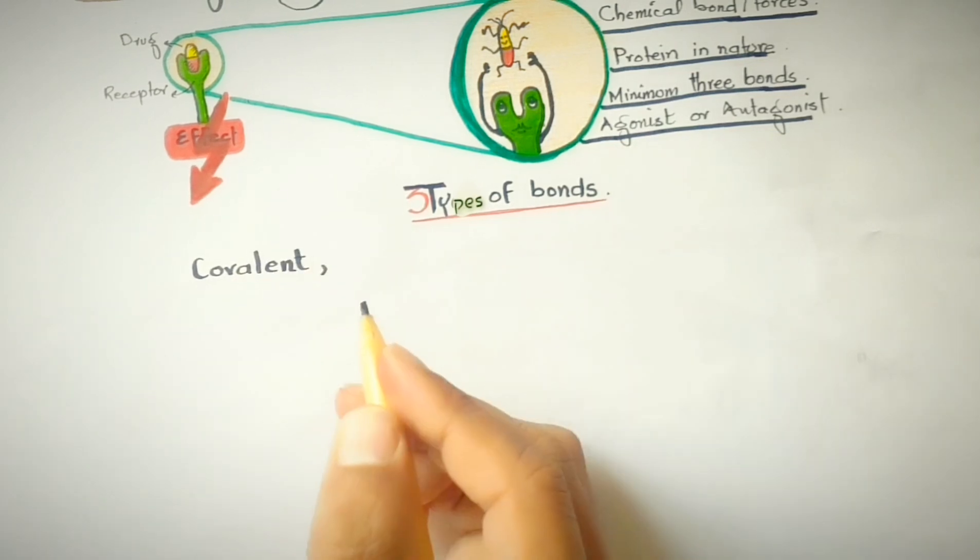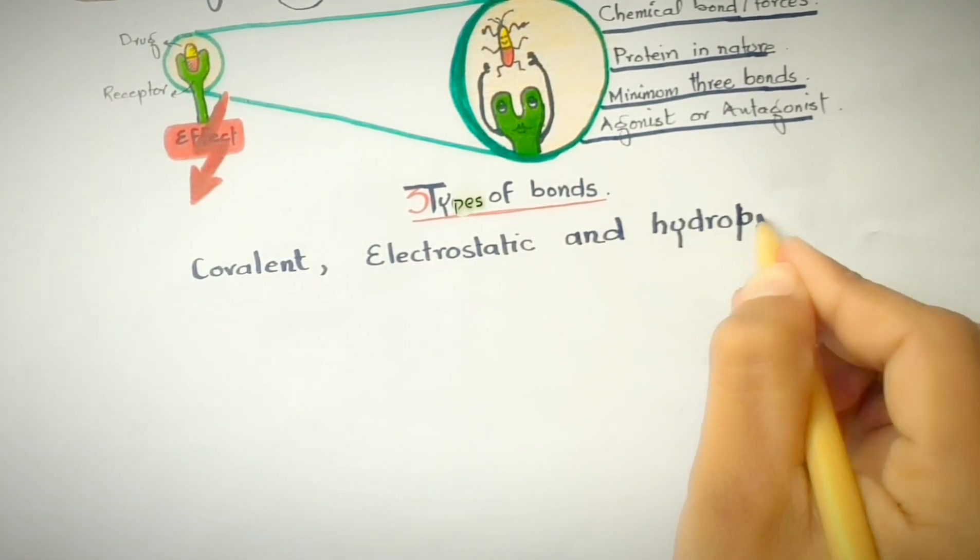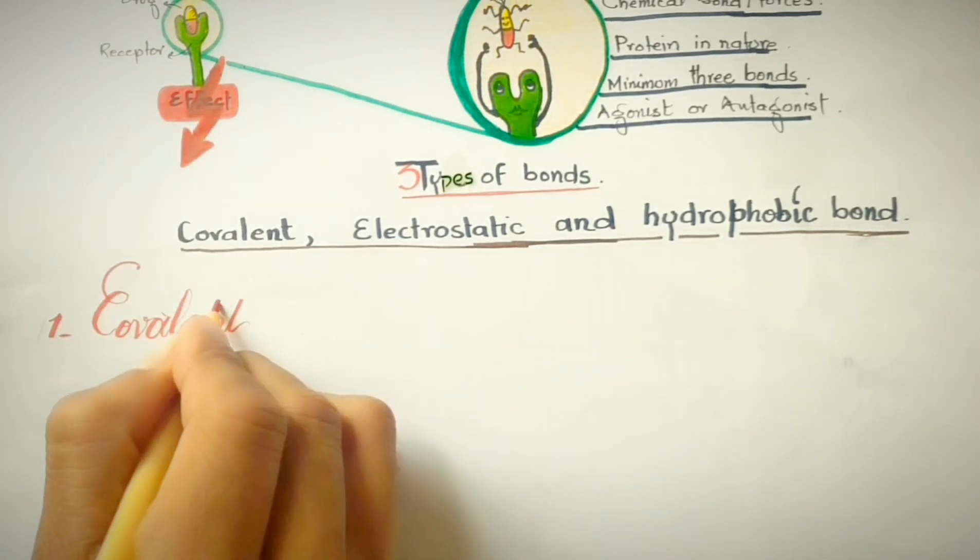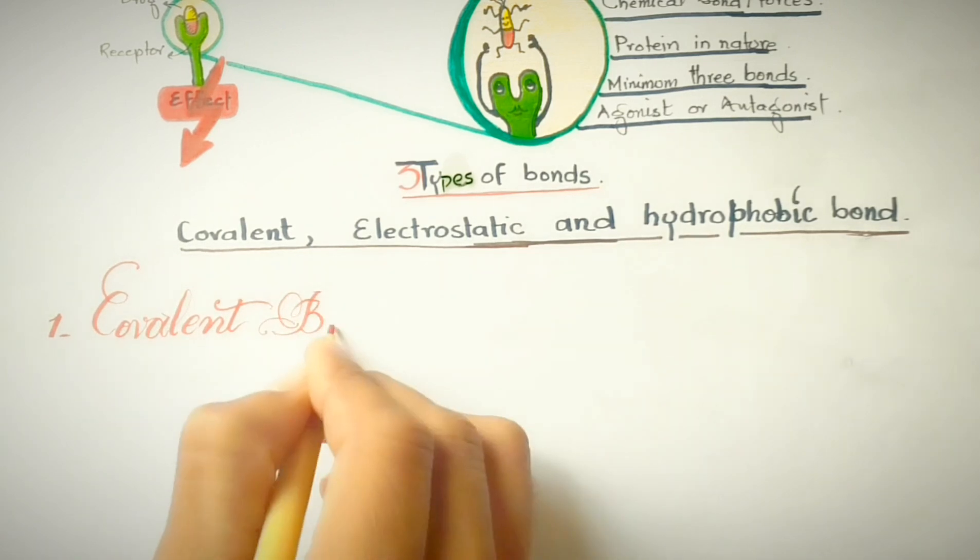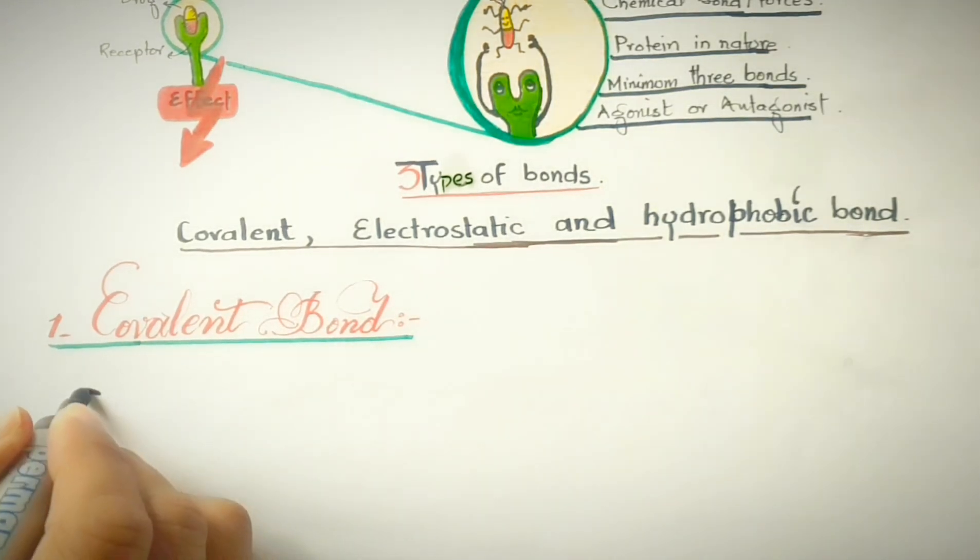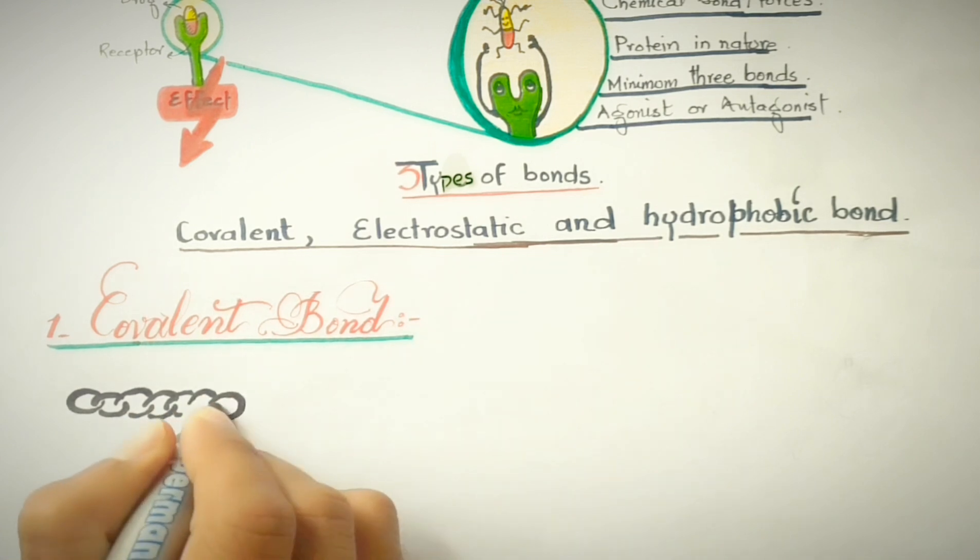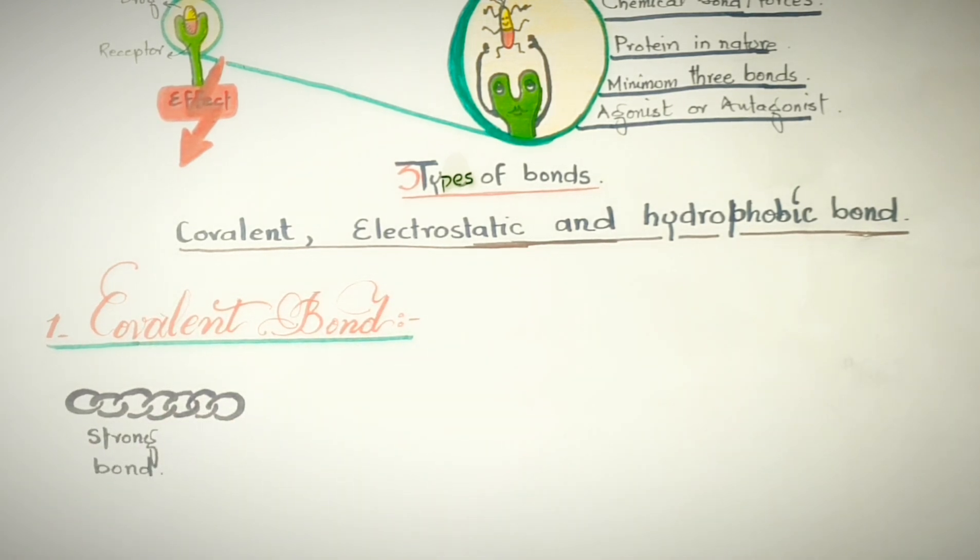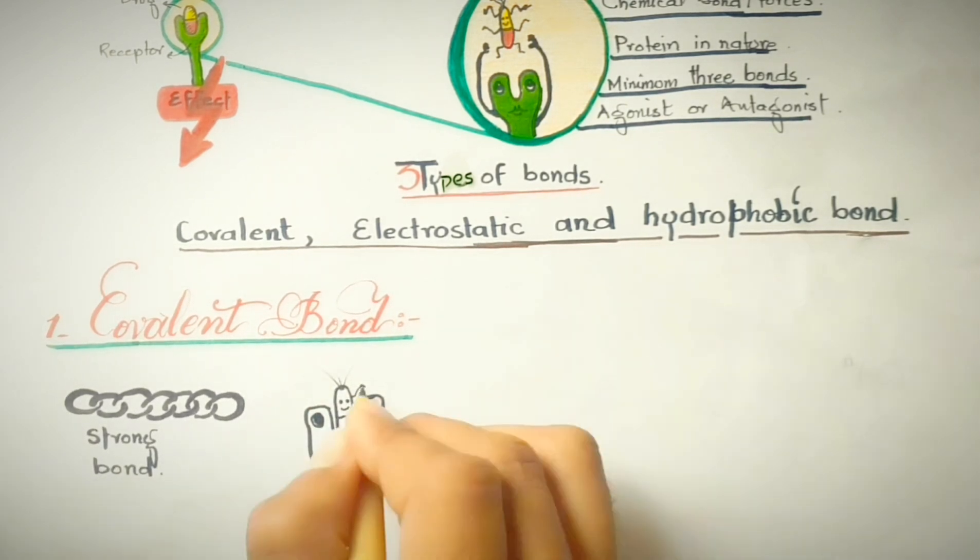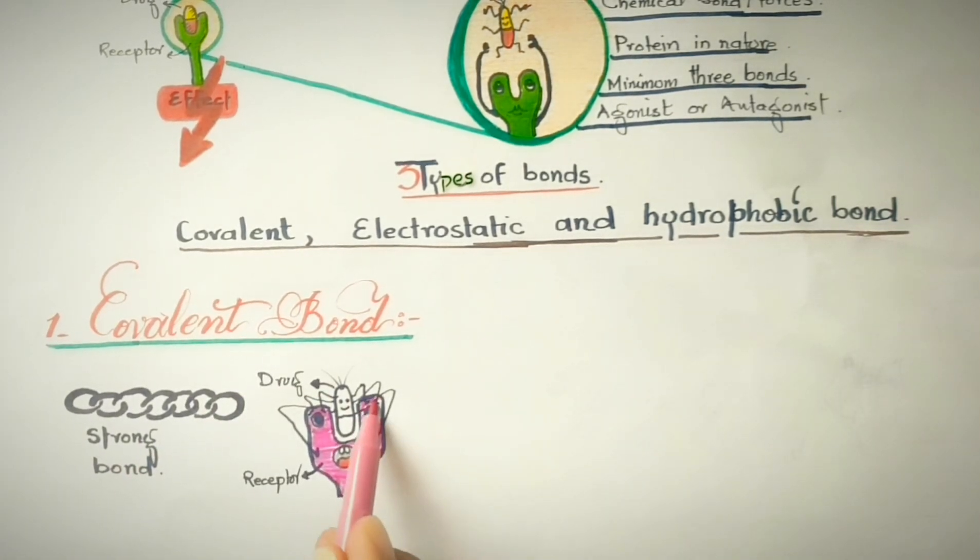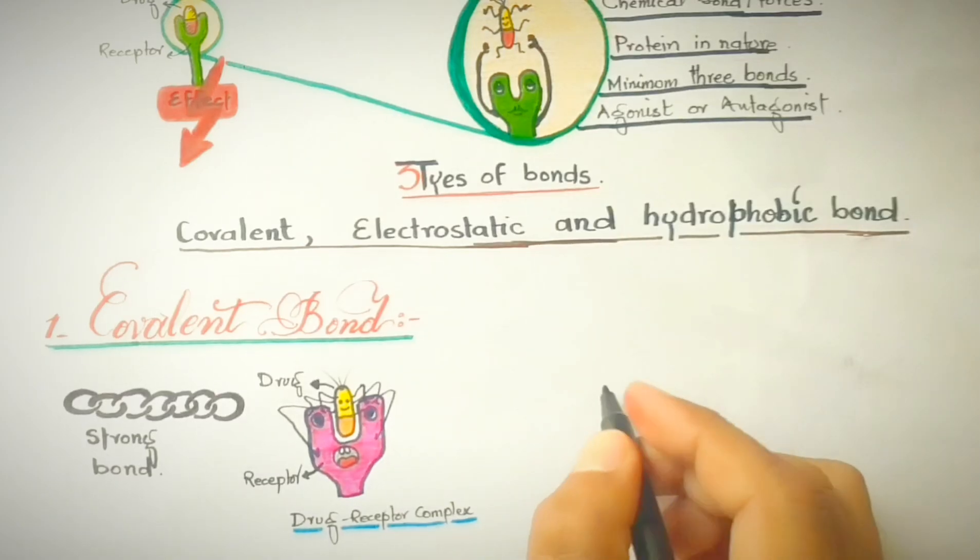So first, what is covalent bond? Well, these types of bonds between drug and receptors are very strong compared to electrostatic bonds and hydrophobic bonds, and these types of bonds are not reversible under physiological condition, means inside the body, because the drug and receptor form a very stable complex with each other. Thus the drug cannot be dissociated from the receptor inside the body.